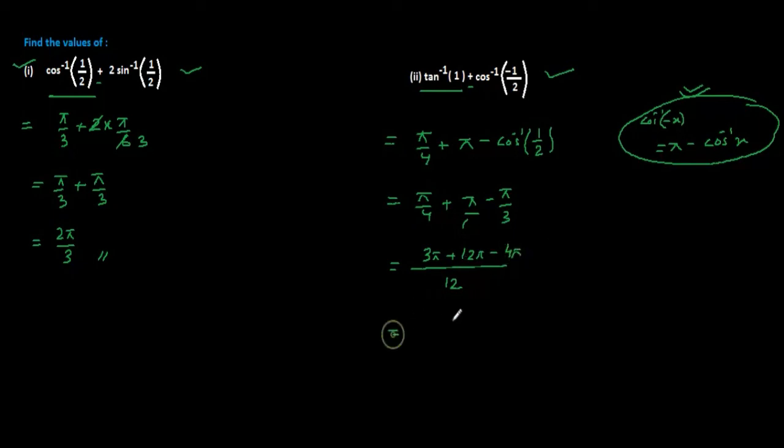If you calculate from here, 3 plus 12 is 15. 15 minus 4 that is 11. The answer will be 11 pi by 12.